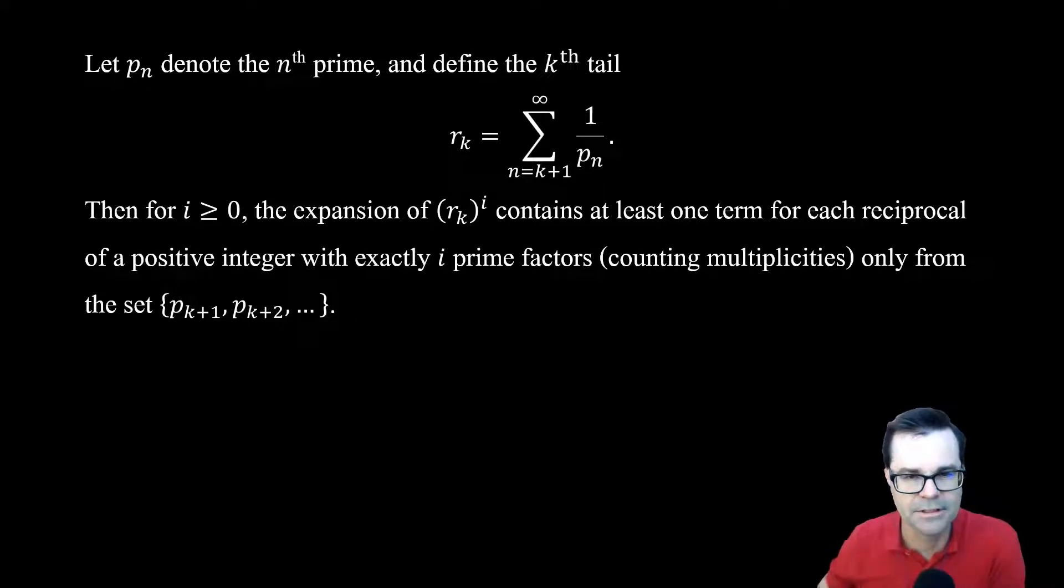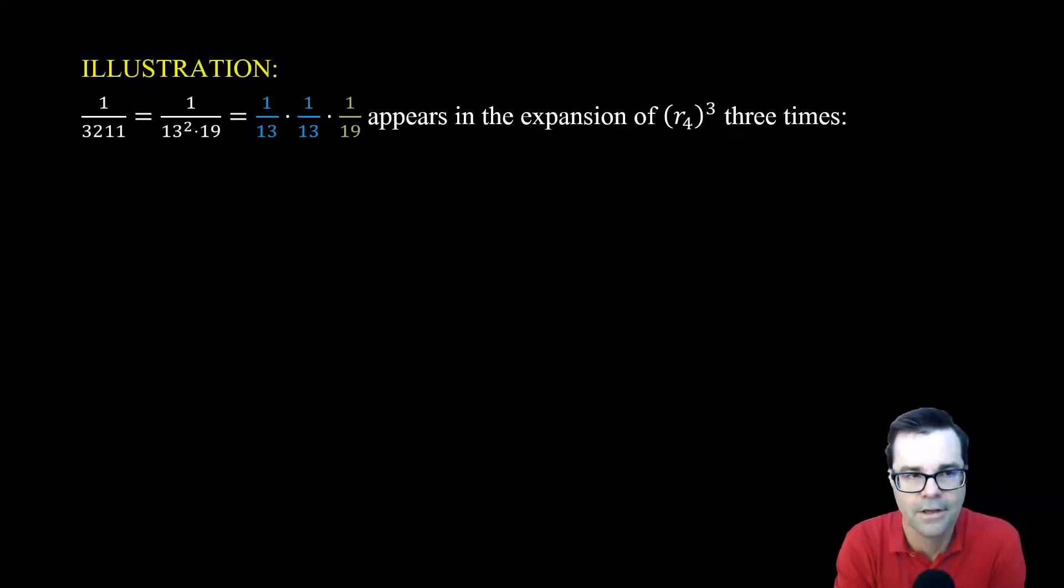This is a little bit tricky to visualize. So what I'm going to do is go over a quick illustration, and hopefully the illustration will help you understand exactly why this is true. So let's look at, for instance, 1 over 3,211. 3,211 has prime factorization 13 squared times 19. So it's 1 thirteenth times 1 thirteenth times 1 nineteenth.